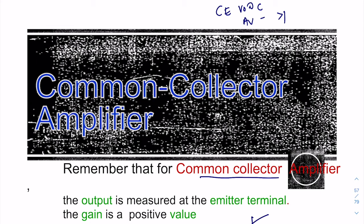So where is the output of the common collector? We have C, B, and E. Your output for the common collector will be at your emitter, and your gain will be a positive value and less than one. Your AV must be positive and the value must be less than one — 0.99 or 0.98, approaching one.